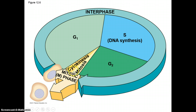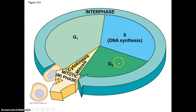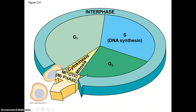The mitotic M phase takes up roughly 10% of the entire cell cycle. Interphase is the other 90% and can be broken down into G1, S, and G2. At the end of the mitotic phase, you have two cells, and each cell will continue on in the cell cycle.